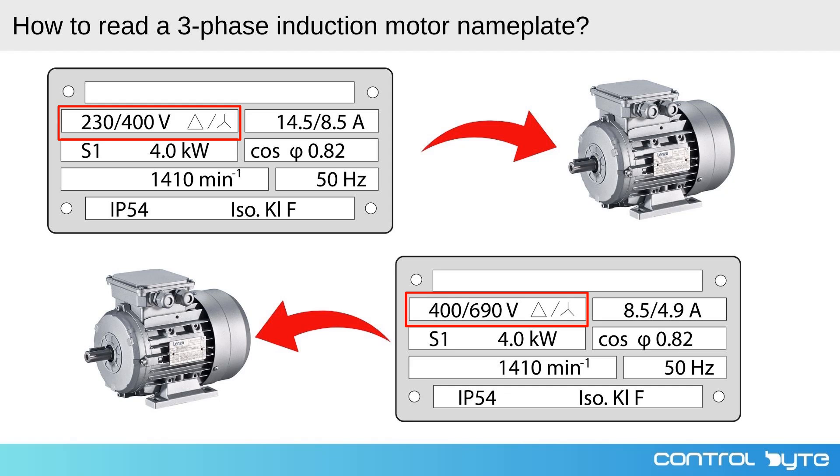The first number refers to the voltage if the motor is connected in a delta configuration, and the second number refers to the voltage if it is connected in a star configuration. It's important to match the motor's voltage rating with the supply voltage to ensure efficient operation and to avoid damaging the motor.